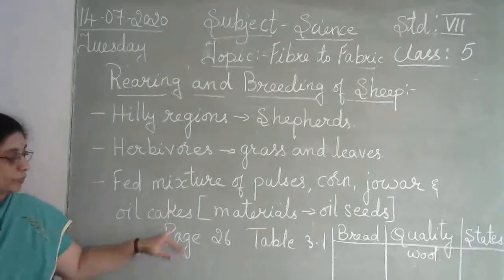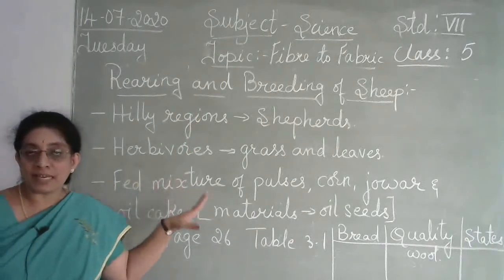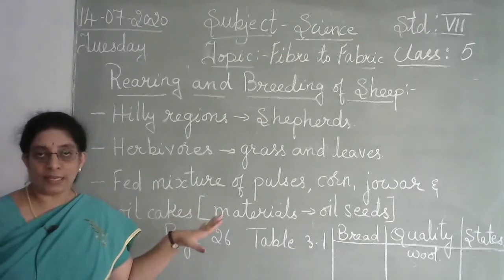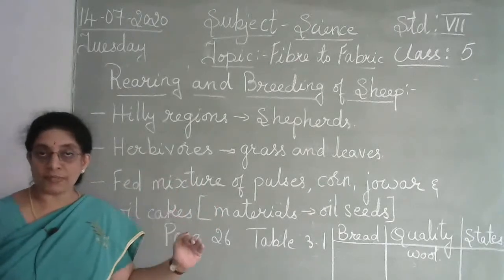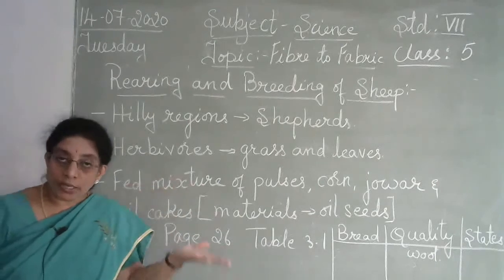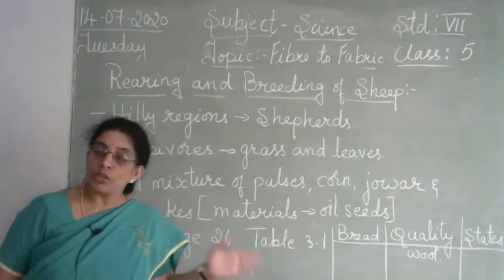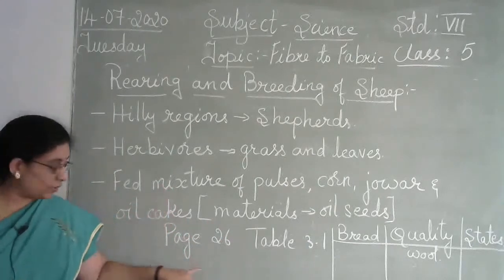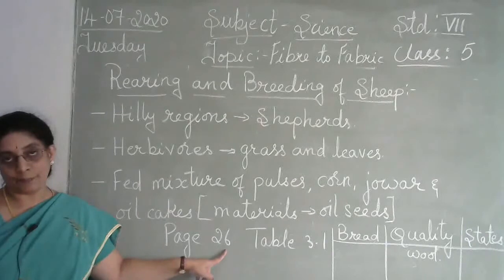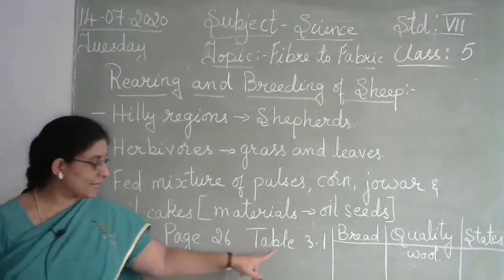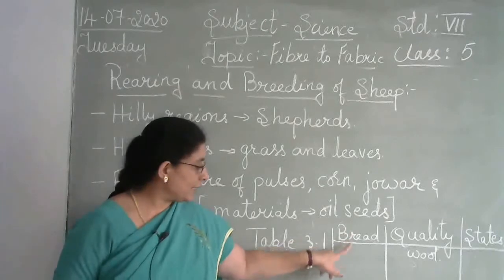To know how many varieties of sheep there are, their names, the quality of wool each produces, and in which state each is found, refer to page number 26, Table 3.1.